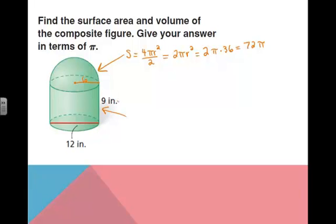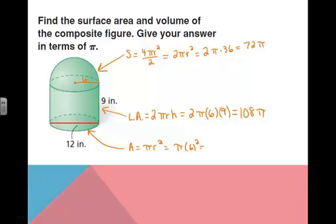Now, the area for this, I'm going to do the lateral area, which is 2πrh, which is 2π times the radius of 6 times the height of 9. So it's 9 times 6 times 2, or 12 times 9, which is 108π. And now lastly, I need the area of this base, which is πr², which is π times 6², which is 36π. So all of those together will give me my surface area. We've got 72 plus 108 plus 36. And so our surface area is equal to 216π square inches.